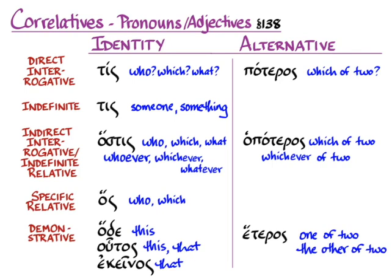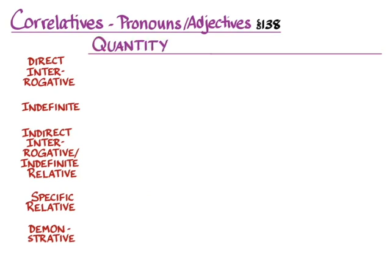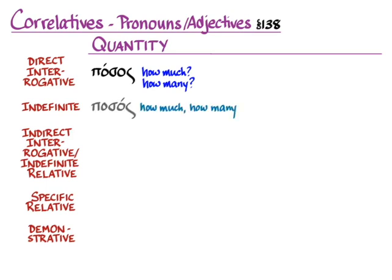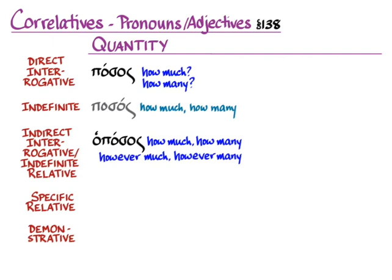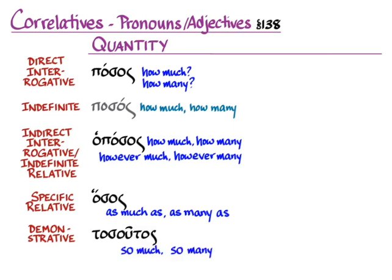Our correlative pronouns and adjectives continue with ones that indicate quantity. To ask 'how much' or 'how many,' we use posos, posē, poson. The enclitic version — not in Hanson and Quinn but it exists — is posos, posē, poson. The indirect interrogative is hopossos, hossē, hoposon: 'she asked how many eggs you bought.' In an indefinite relative situation it means 'however much' or 'however many.' The specific relative — 'she bought as many as she needed' — is hossos, hossē, hosson. And the demonstrative is tosoutos, tosoute, tosouta, meaning 'that many' or 'so many.'